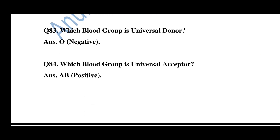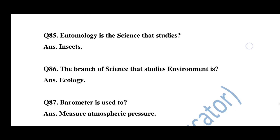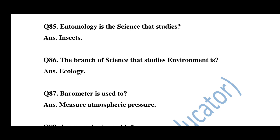Question number 83: Which blood group is the universal donor? Question number 85: Entomology is the science that studies insects. Question number 86: The branch of science that studies the environment is ecology.